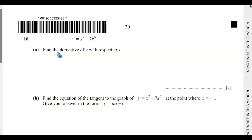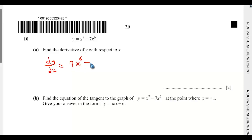Question 10a: find the derivative of y with respect to x. So, dy/dx will be equal to 7 multiplied by x to the power of 6, minus 6 times 7, that is 42, then x to the power of 5. So we have 7x to the power of 6 minus 42x to the power of 5.